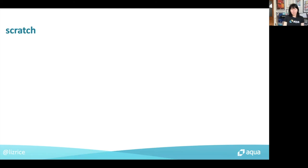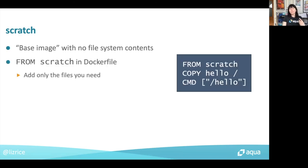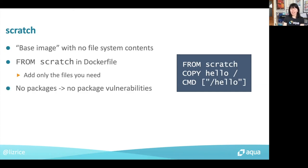If you're using a compiled language like Go that compiles to a standalone binary, you can get even smaller — you can use the scratch image. Scratch is not really even a base image; it's a reserved word representing an empty base image. There are no file system contents in scratch. So you can start from scratch in a Dockerfile and add in only the files that you need. Because there's nothing else in that image — only the files you've added — there can't be any vulnerabilities. It's a really good way of producing extremely small images with no package vulnerabilities for standalone binary applications, so if you're using languages like Go, Rust, or C, scratch could be a great way to go.